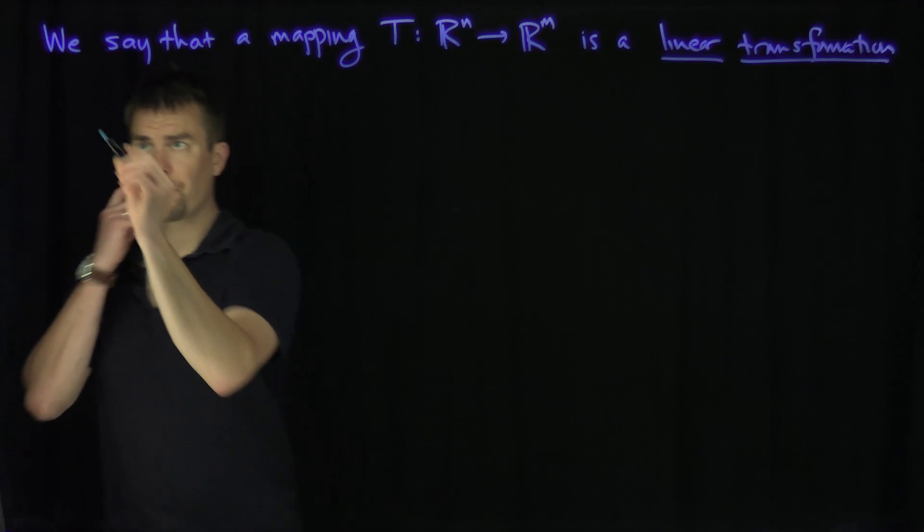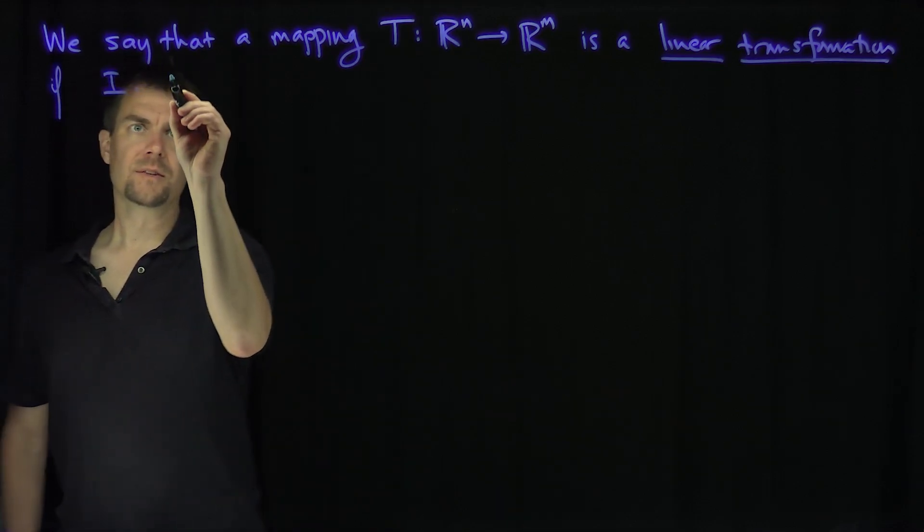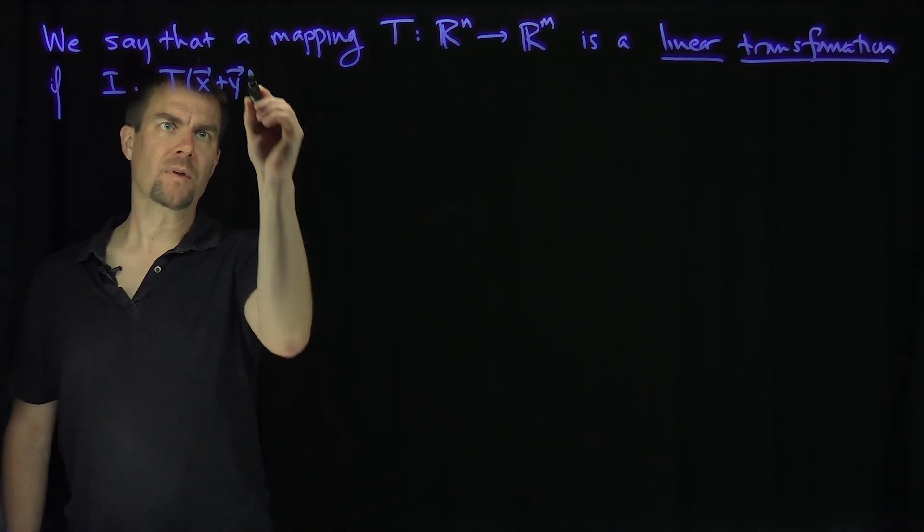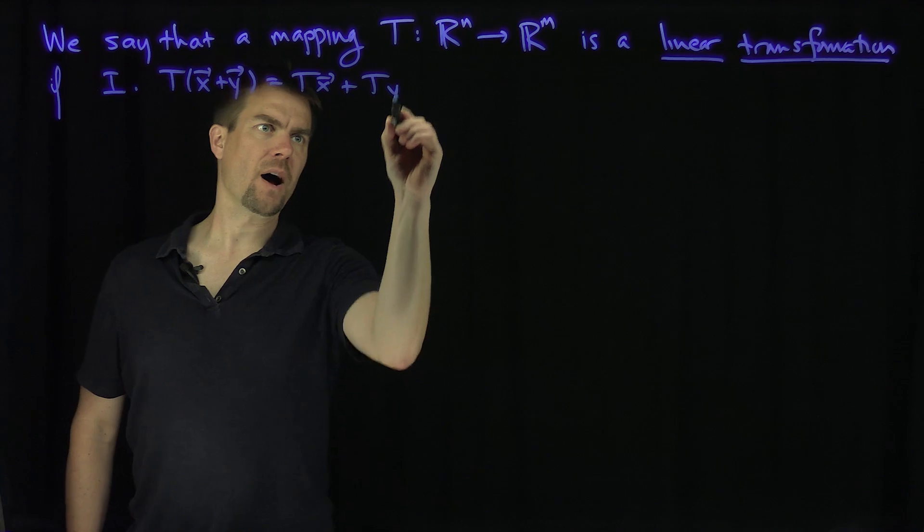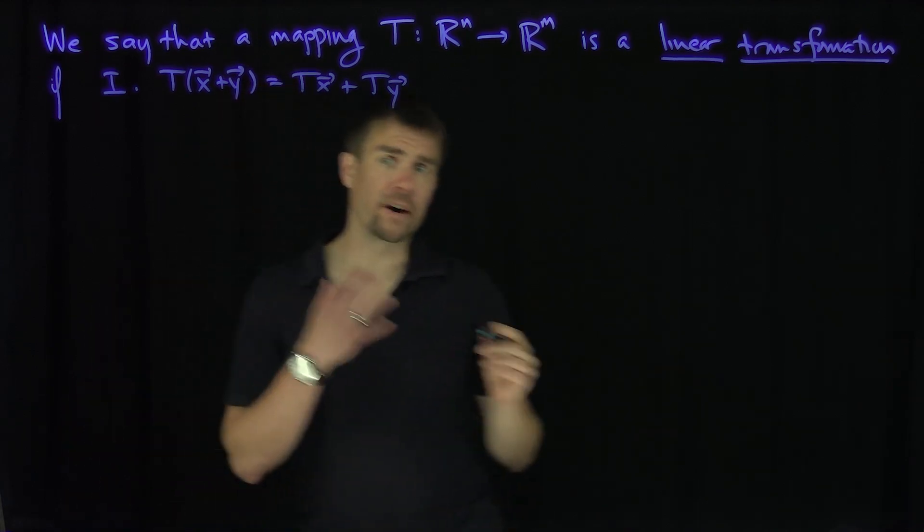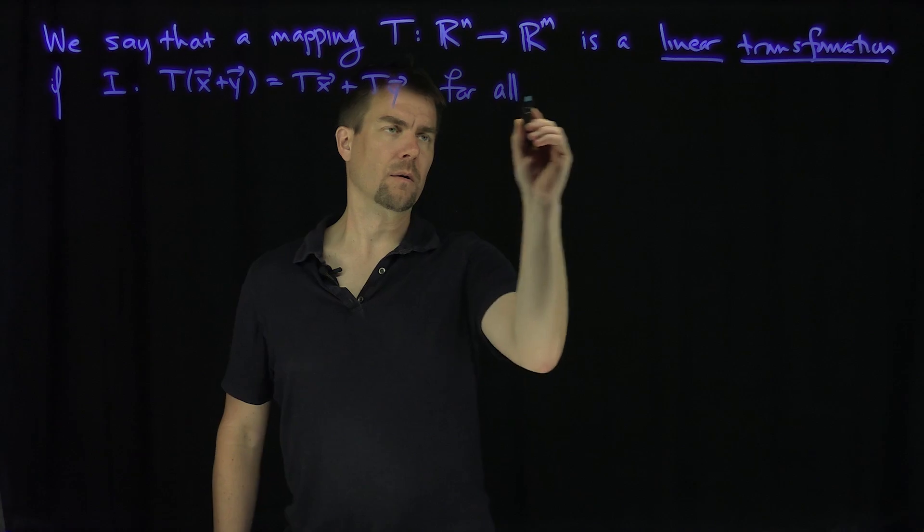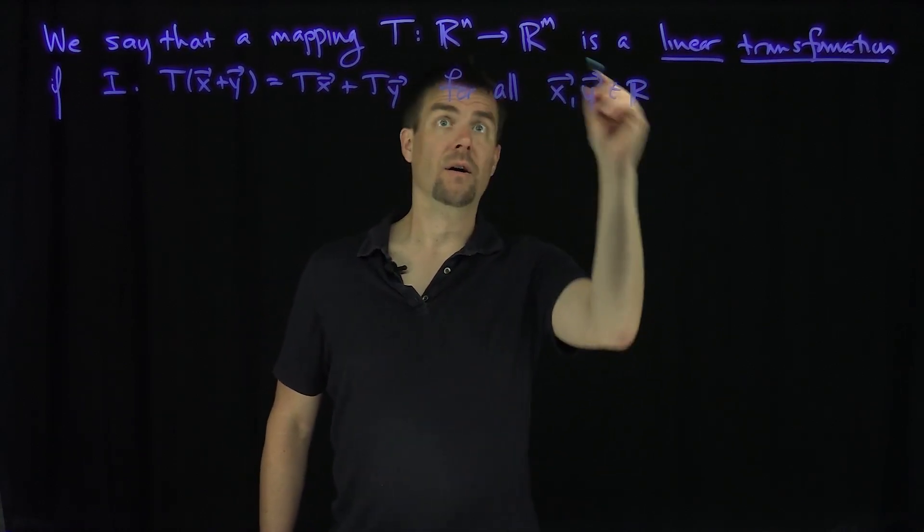If two things are true, if condition one is that T of x plus y is equal to T of x plus T of y for all vectors x and y, for all x, y in R^n.